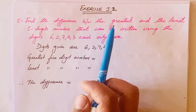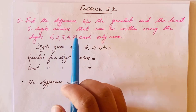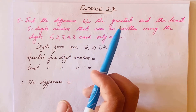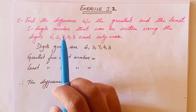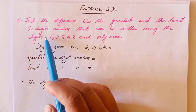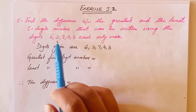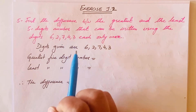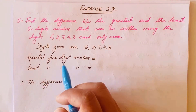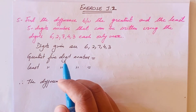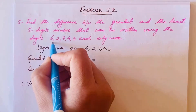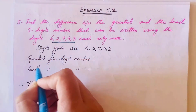Question five: find the difference between the greatest and the least five-digit number that can be formed using the digits 6, 2, 7, 4, and 3. So first of all we have to find the greatest and the least five-digit number using these digits.